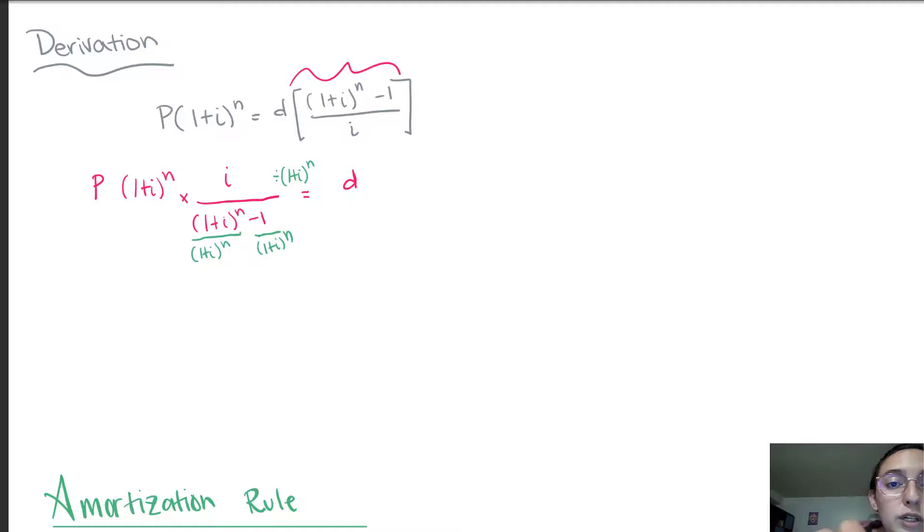Then in the numerator, we'll be left with P times I. This is going to simplify to 1. In the denominator, this term also simplifies to 1 minus, and then instead of writing this as a stacked fraction, another rule in math is we can move up the factor from the denominator to the numerator by making the exponent negative.